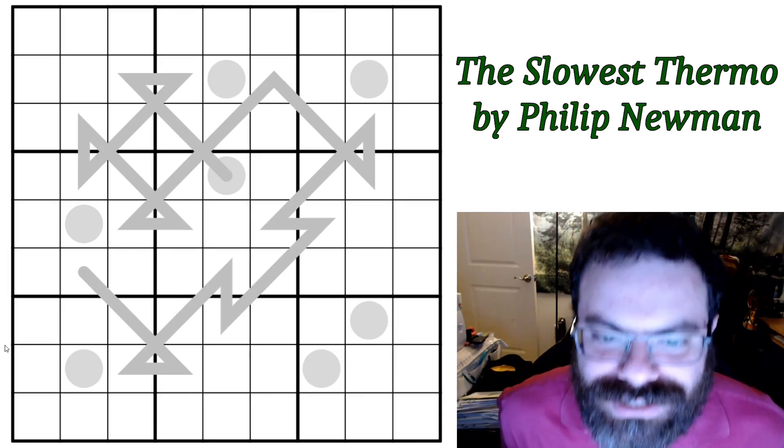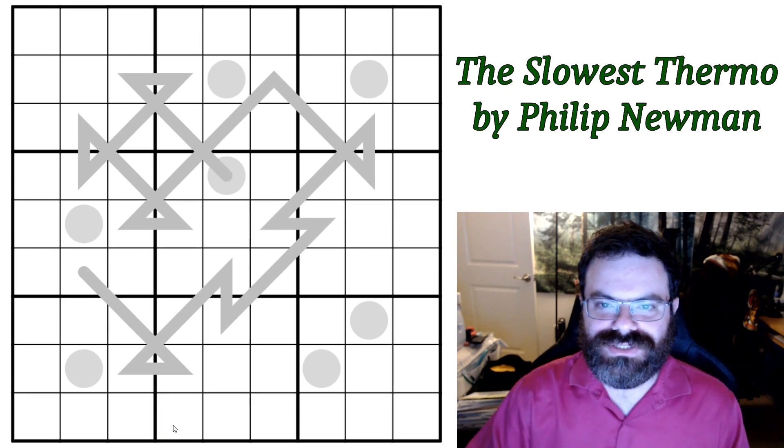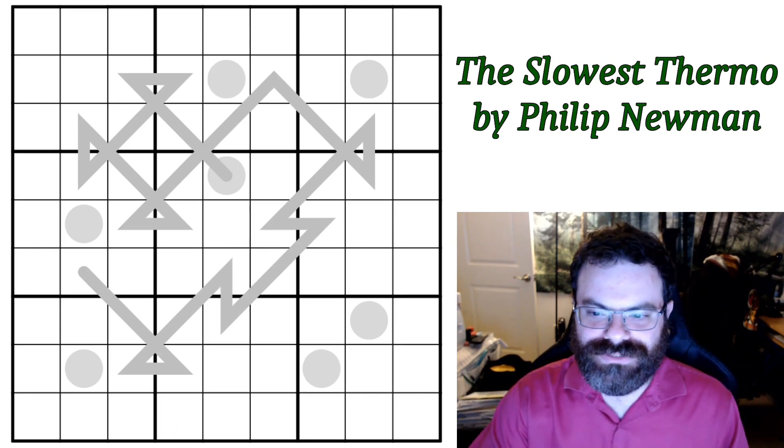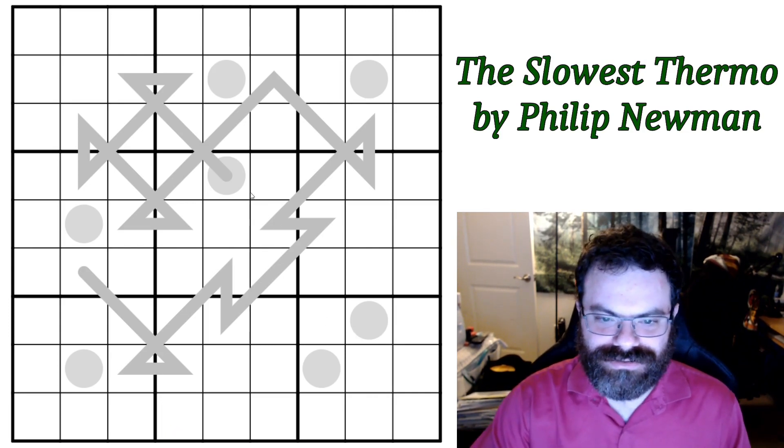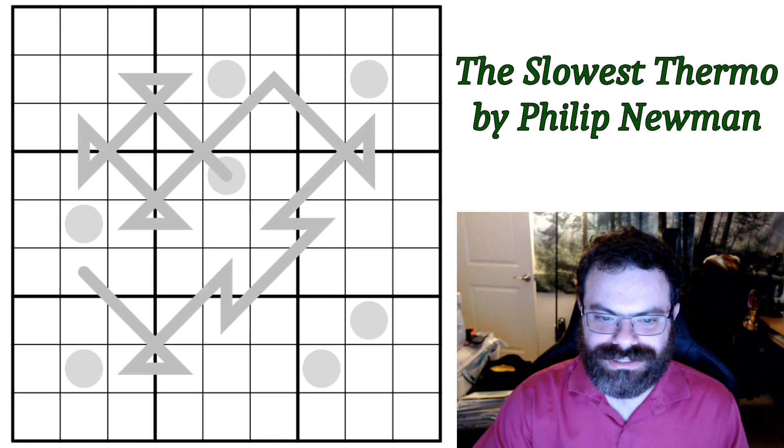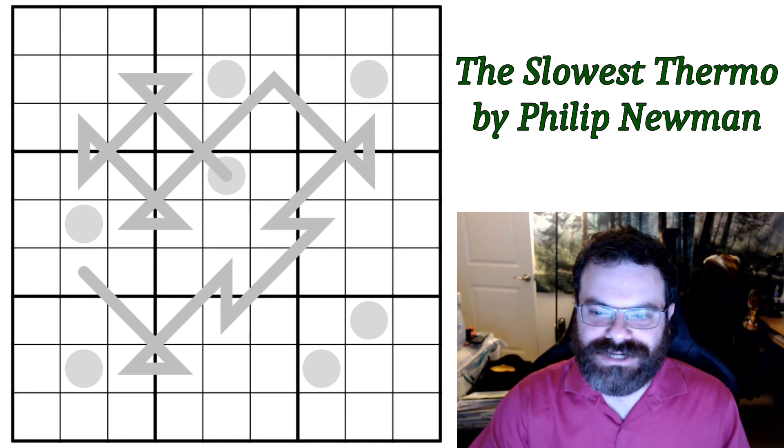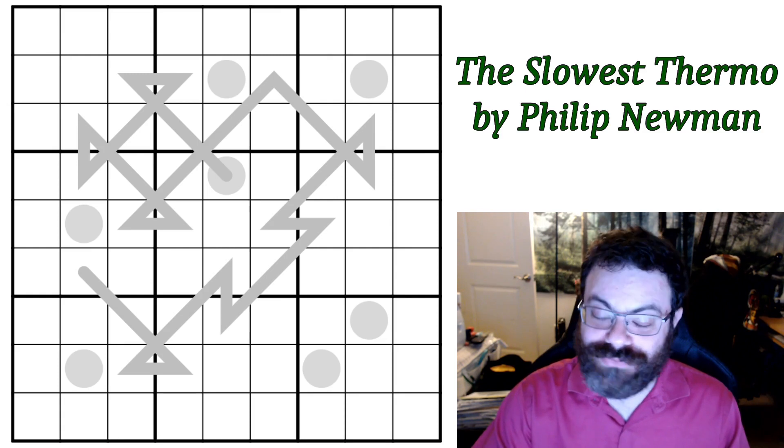Hello! So today I have a new live solve for you. This puzzle is called The Slowest Thermometer by Philip Newman. And if you look at it, it has a thermometer on it that seems a little bit longer than it should be, so I'll go over the special rules for that in a sec. Based on the ratings in the Discord archive, this might actually be too easy for a live solve, but we'll see.